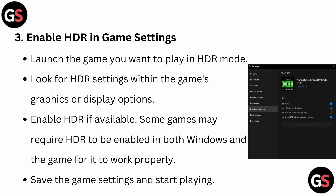Step 3: Enable HDR in game settings. Launch the game you want to play in HDR mode and look for HDR settings within the game's graphic or display options. Enable HDR if available. Note that some games may require HDR to be enabled in both Windows and the game for it to work properly. Save the game settings and start playing.